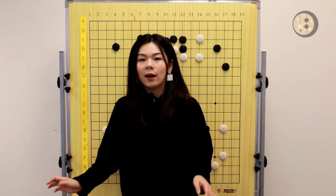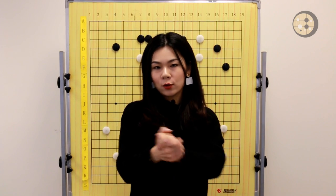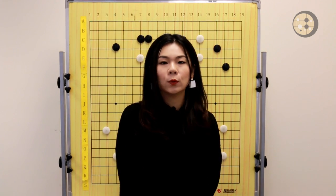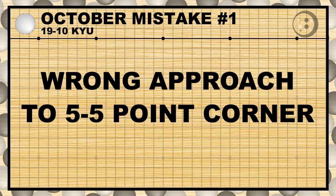These are the mistakes by 30 to 20 kyu players. Now let's move to 20 to 10 kyu players. The first mistake by 19 to 10 kyu players is the wrong approach move to a 5-5 point corner.